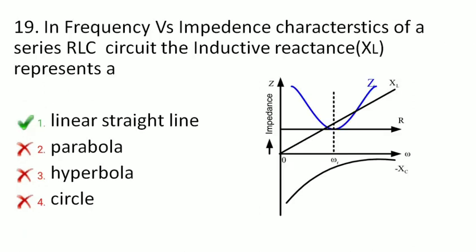Next is: in the frequency versus impedance characteristics of a series RLC circuit, the inductive reactance represents which curve? The inductive reactance is a straight linear line, as you can see. This is the inductive reactance and this is the capacitive reactance. So the inductive reactance is a linear straight line.